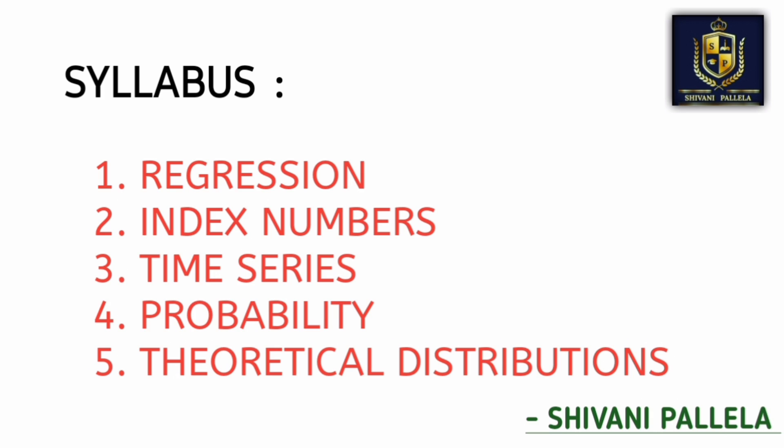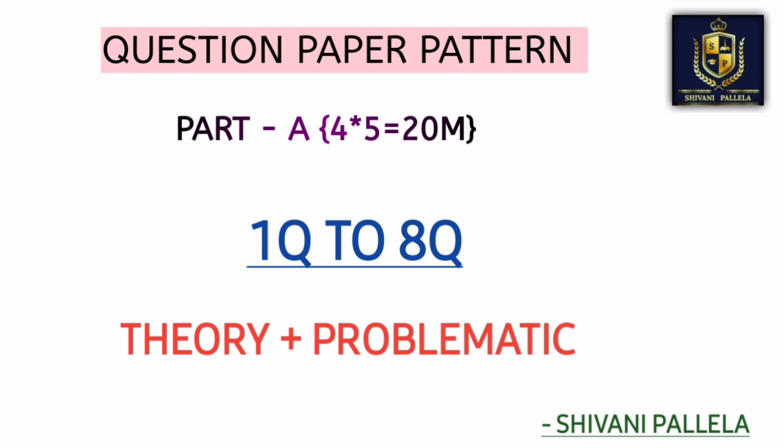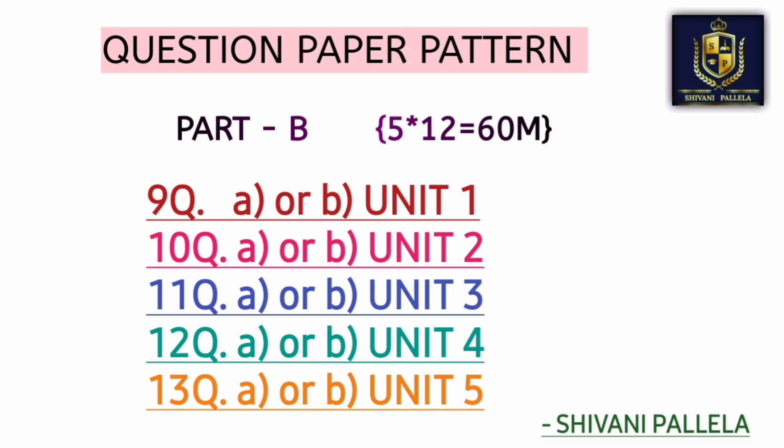Coming to the question paper pattern — same as Business Stats One — Part A consists of 20 marks. You need to attempt five questions, each carrying four marks, from questions one to eight. In Part B, the ninth question comes from Unit One, tenth from Unit Two, and questions 11 to 13 from Units Three, Four, and Five. Each question has an internal choice — either A or B — you attempt any one. For long theory questions, you need to write a minimum of three sides.